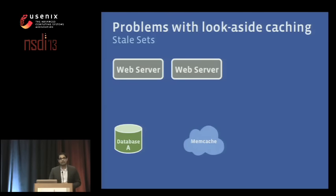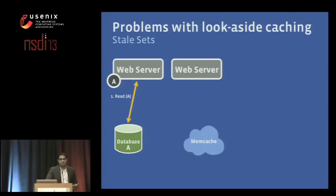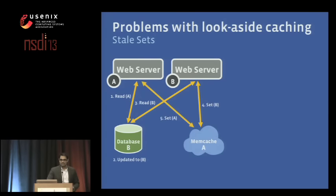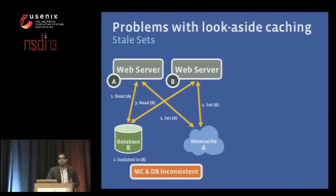One of the problems with look-aside caching is stale sets. With two web servers: one reads value A from the database. Then the database gets updated to B by another client. Another web server reads B and sets it in the cache. Now the straggler with A comes in and tries to set that value — suddenly memcache and the database are inconsistent. And this is not a transient inconsistency; it's a permanent inconsistency until the value is deleted out of the cache. This is bad.